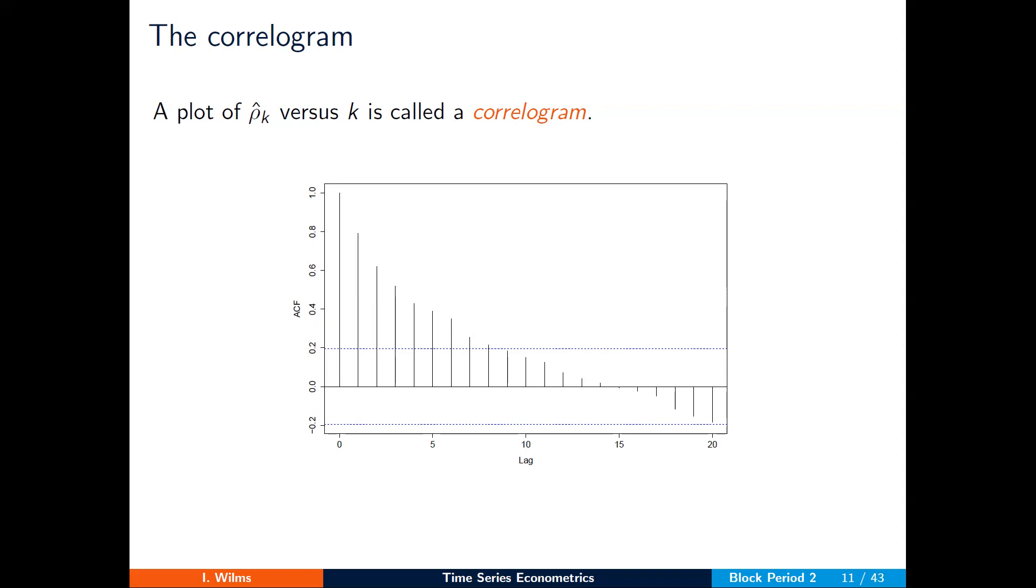At lag 0, the correlation will always be equal to 1, as it measures the correlation between yt and itself. At lag 1, we have the autocorrelation between y at this time point and the previous time point, and so on.